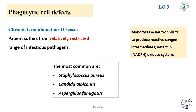Phagocytic cell defects — like chronic granulomatous disease — cause patients to suffer from a relatively restricted range of infectious pathogens. The factors underlying this restriction are twofold. First, many bacteria help bring about their own destruction by generation of H2O2 through their own metabolic processes. If they are catalase-positive, peroxidase is destroyed and bacteria will survive. Thus, neutrophils from these patients readily take up catalase-positive staphylococci in the presence of antibody and complement but fail to kill them intracellularly.